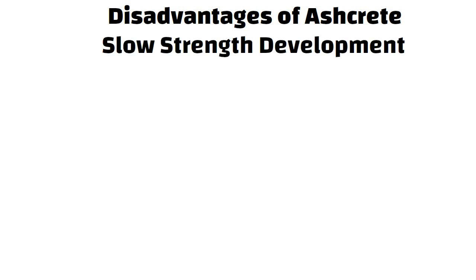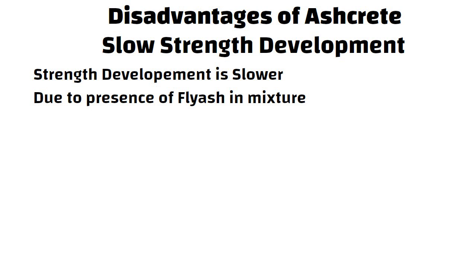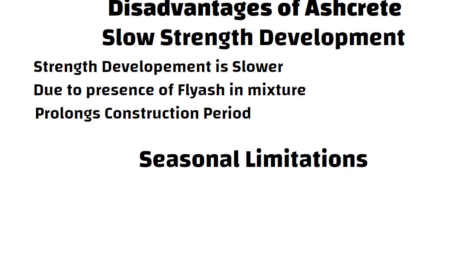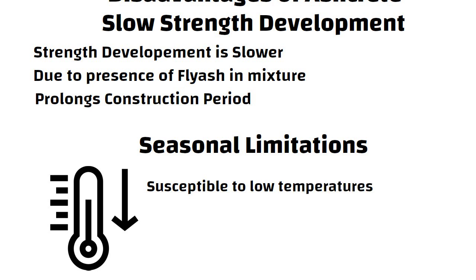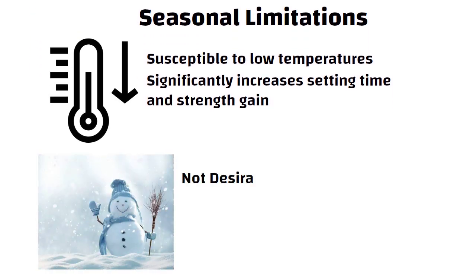Now let us discuss the disadvantages of ashcrete. Slow strength development: Strength development in ashcrete is slower than in normal concrete due to the presence of fly ash in the mixture, which could prolong the construction period of a project. Seasonal limitations: Ashcrete is susceptible to low temperatures during pouring, significantly increasing the setting time and strength gain, so using fly ash in winter is not desirable.